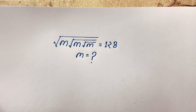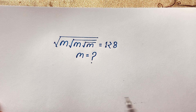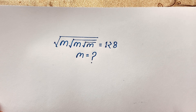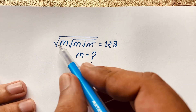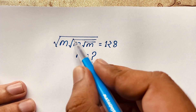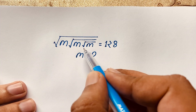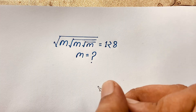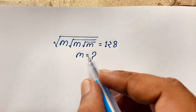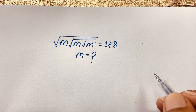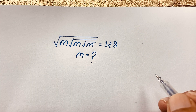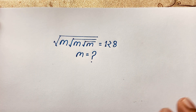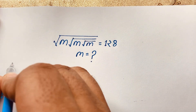Hello everyone, in this video we'll solve a nice radical math question. The question is: the square root of m times the square root of m times the square root of m is equal to 128. We'll find out what m equals. It's a nice math Olympiad question.